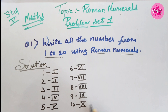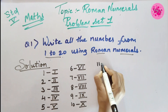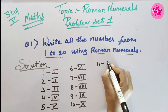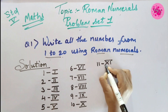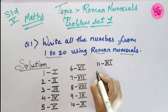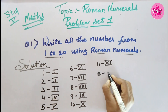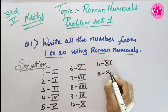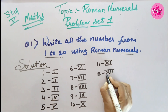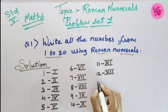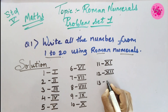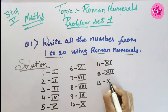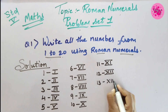For 11 we write X and I (XI). For 12 we write X and II (XII). For 13 we write X and III (XIII).